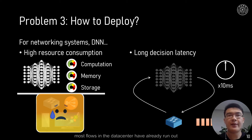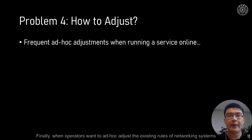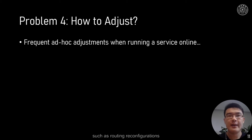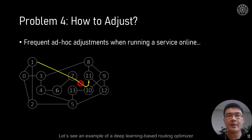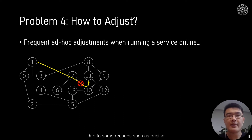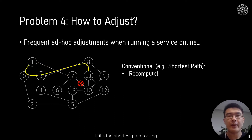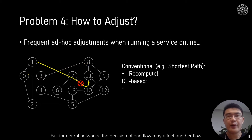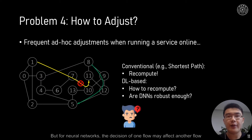When scheduling decisions come back after tens of milliseconds, most flows in the data center have already run out. Finally, when operators want to ad hoc adjust existing rules of networking systems, such as routing reconfigurations, how can adjustments be performed on DNN-based rules? Consider a deep learning-based routing optimizer where network operators want to migrate elephant flows away from the link between node 7 and 10. For neural networks, the decision of one flow may affect another, because neural networks are not robust to input changes.